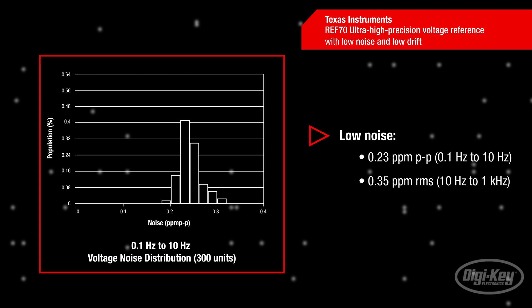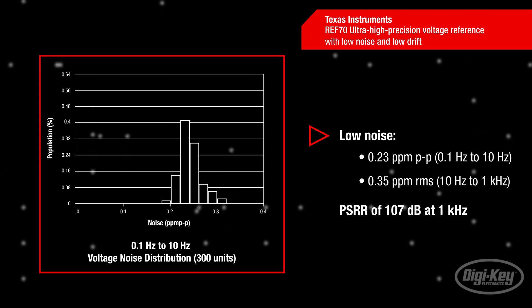The REF70 family also offers the industry's lowest 1 over F noise of 0.23 parts per million peak to peak from 0.1 hertz to 10 hertz and integrated noise of 0.35 parts per million RMS between 10 hertz and 1 kilohertz.